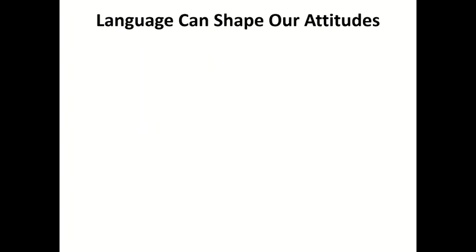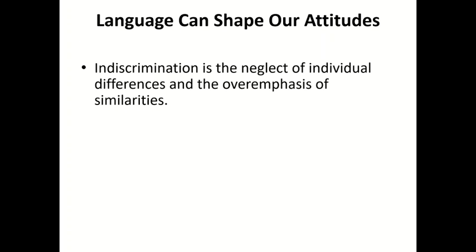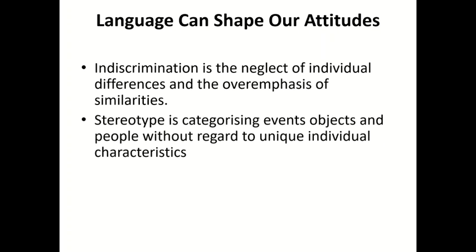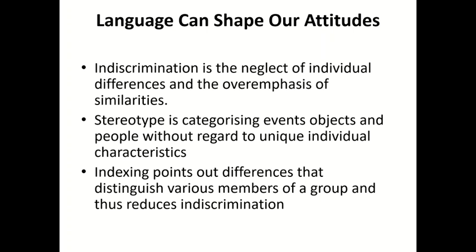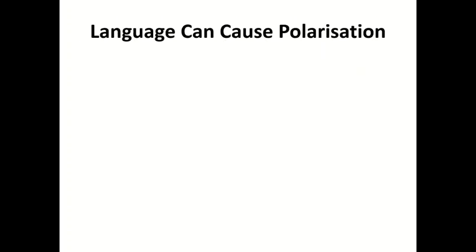Language can shape our attitudes in different ways. Indistimulation is the neglect of individual differences and the overemphasis of similarities — thinking that everyone must understand exactly what you have said. Stereotype is another barrier: categorizing events, objects, and people without regard to unique individual characteristics, lumping them together. Indexing points out differences that distinguish between various members of a group, and thus reduces indistimulation. You must index the particular people you are talking to.